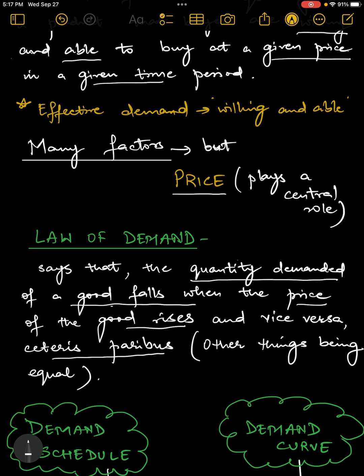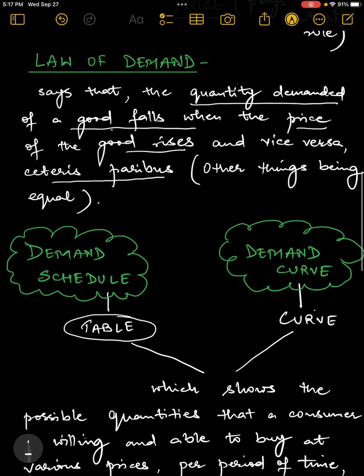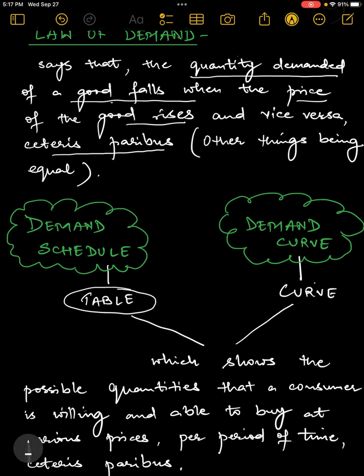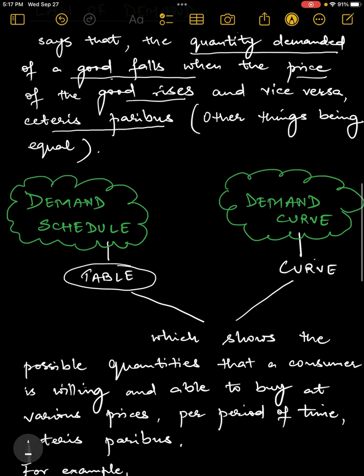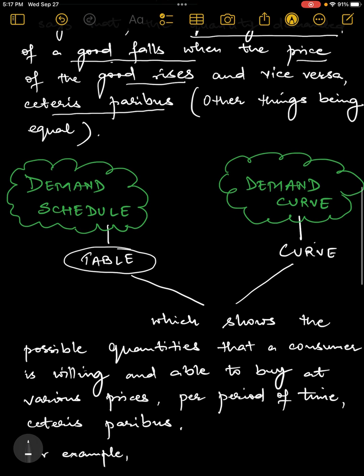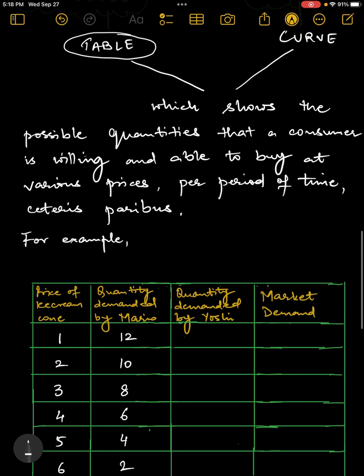You will also come across two more important terms in economics when you are studying theory of demand, which are called demand schedule and demand curve. The demand schedule is a table. It's a table that shows the quantity demanded at each price, and demand curve is just illustrating the same table in the form of a graph, which will also show how the quantity demanded of the good is changing.